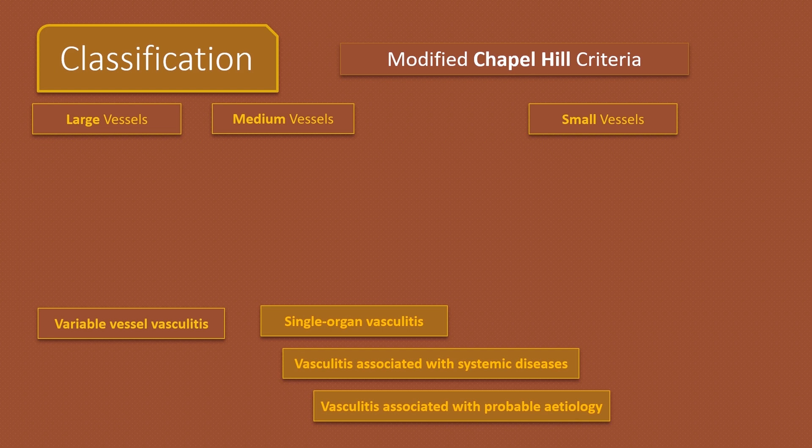Two diseases affect large blood vessels such as the aorta and its branches. These are Giant Cell Arteritis and Takayasu's Arteritis. Giant Cell Arteritis is a disease of the elderly, while suspect Takayasu's if there is large vessel vasculitis in patients less than 55 years old.